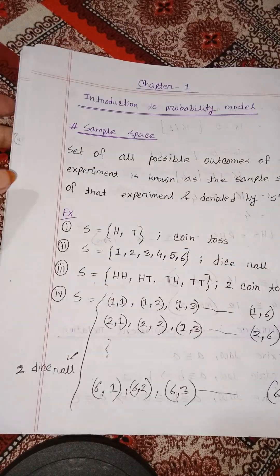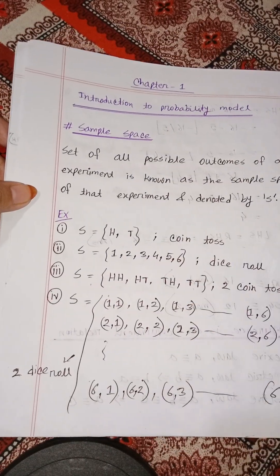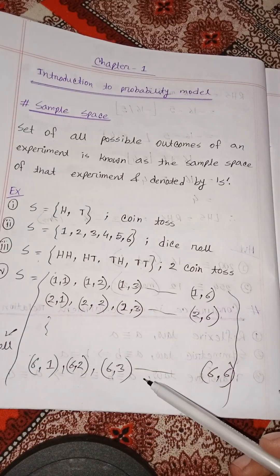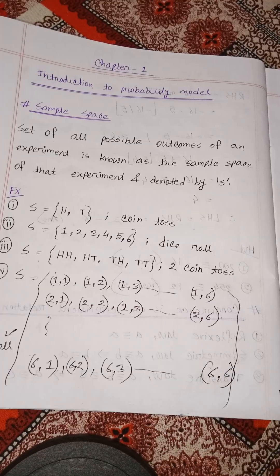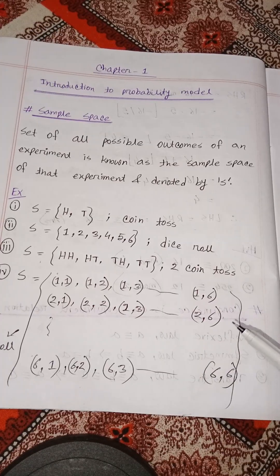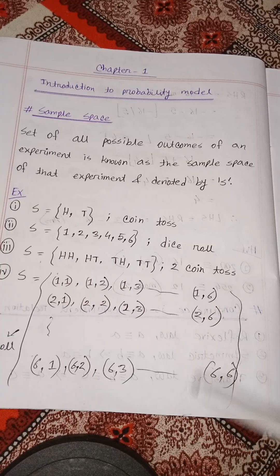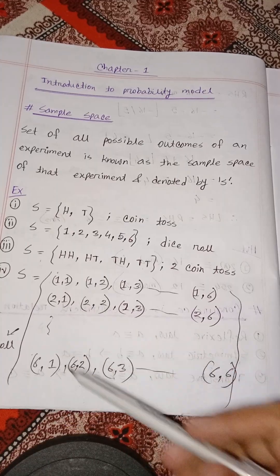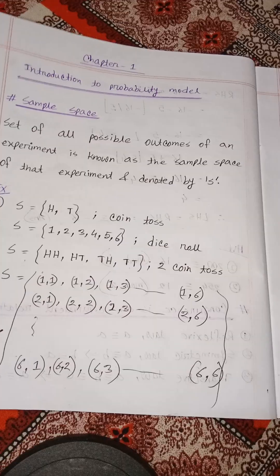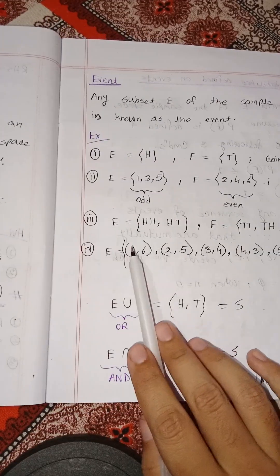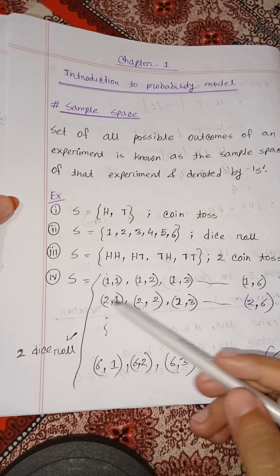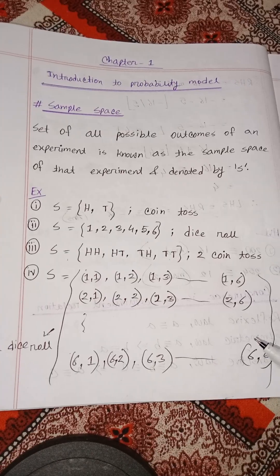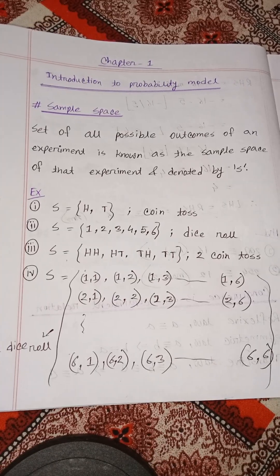Now, if there are two dice rolls, the sample space has 36 possible outcomes. We will look at the event where the sum of the two dice is equal to 7.